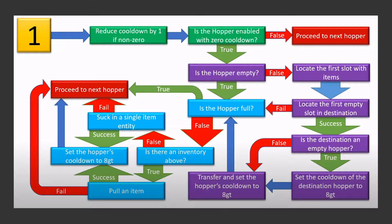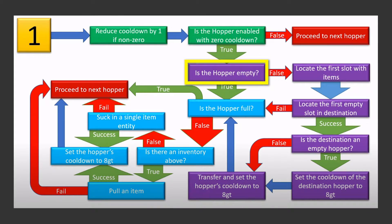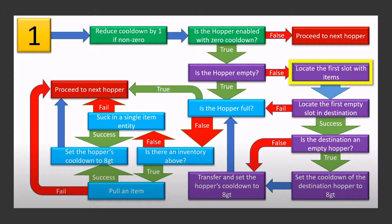When a hopper is ticked, it first reduces its cooldown by 1. Then if the hopper is not powered and not on cooldown, it'll check if it's empty — otherwise it stops right there and moves to the next hopper. If the hopper is empty, it goes to a step we'll come back to. Otherwise, it looks for the first item in the hopper and searches for an empty slot in the block the hopper points into.